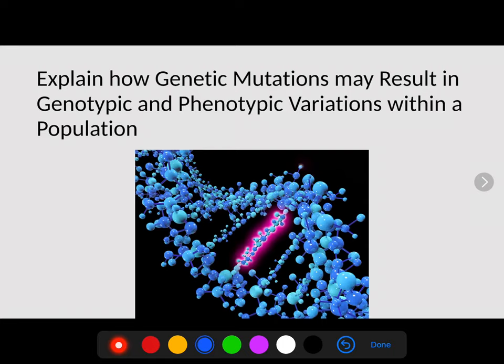This video is part three of topic seven on evolution. In this section we're going to be talking about how genetic mutations may result in genotypic and phenotypic variation within a population. First, let's define what genotypic and phenotypic actually mean.